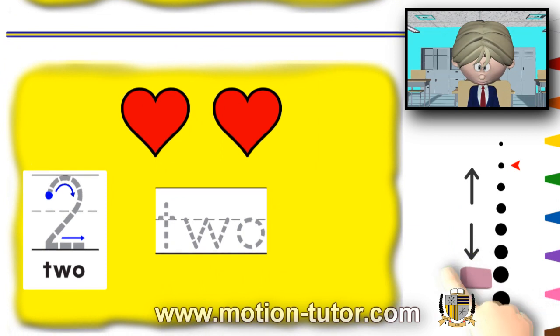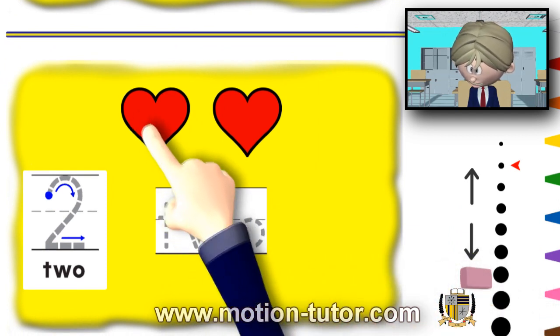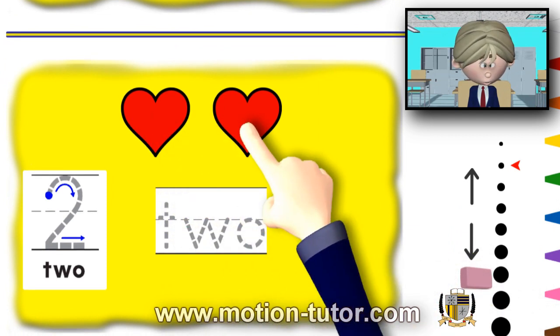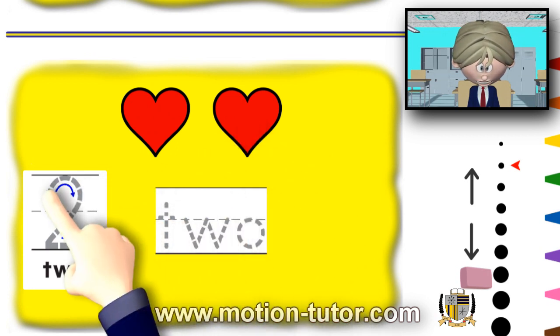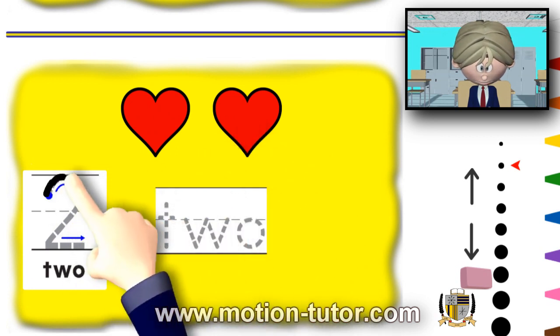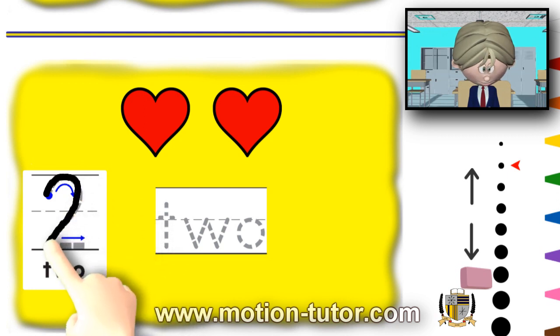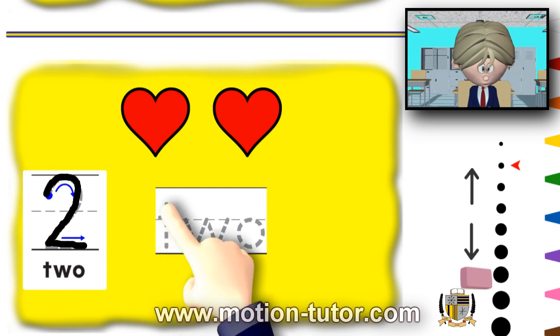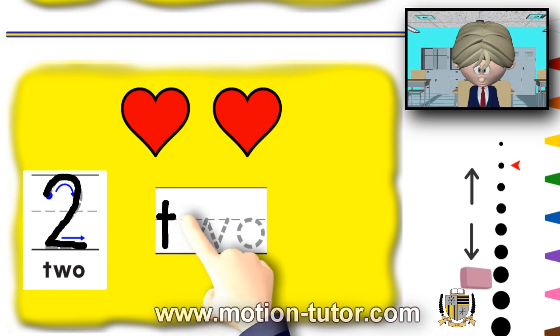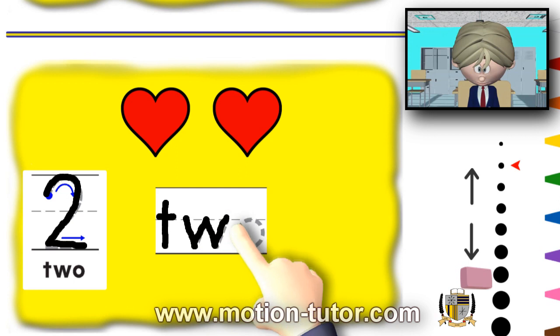And now, for the number 2. We have 2 hearts. 1, 2. And remember how we write the number 2? Come around like so. Come down and then over. And now, we're going to write the number 2. T, W, and the letter O. So, that's the number 2 written out.